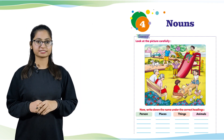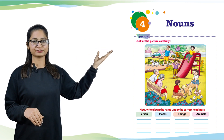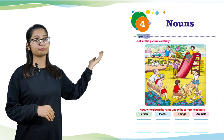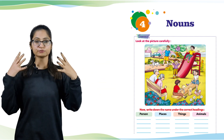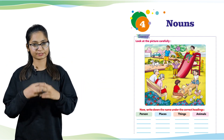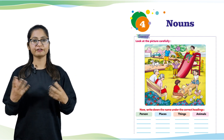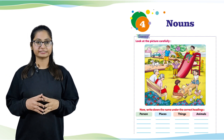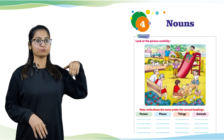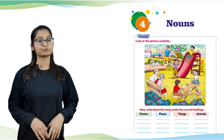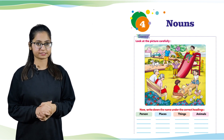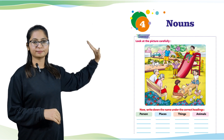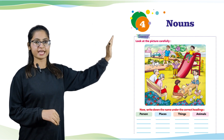Let's read the starter. Look at the picture carefully. We have been given a picture. What we have to do is look at the picture carefully, then write down the name under the correct headings. We have been given four boxes in which we have to write down the particular names: person, places, things, and animals.